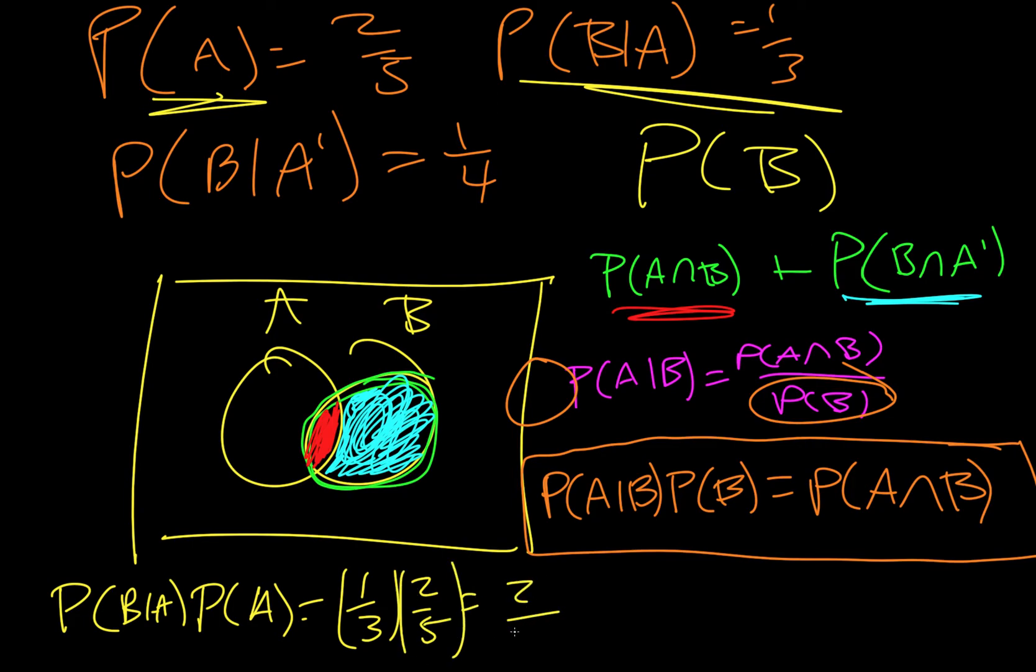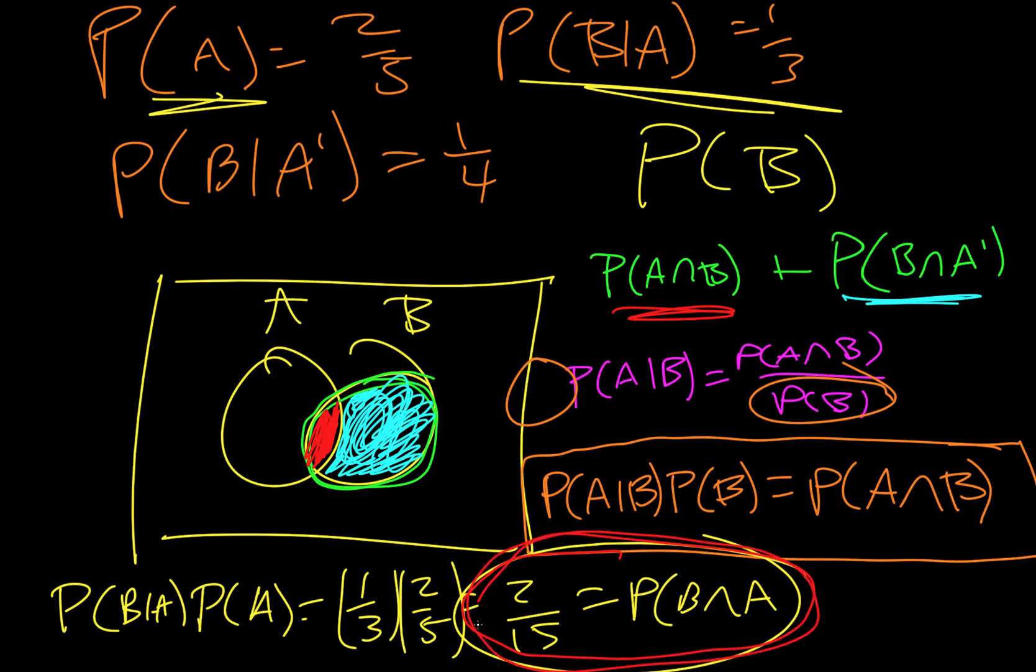And so if we multiply those we get two over fifteen for the intersection of B and A. So in other words this is the red portion on the Venn diagram.